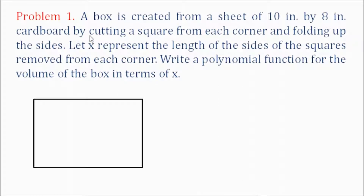For example, a box is created from a sheet of 10 inch by 8 inch cardboard by cutting a square from each corner and folding up the sides. Let x represent the length of the sides of the squares removed from each corner. Write a polynomial function for the volume of the box in terms of x.